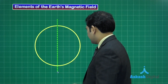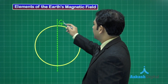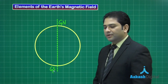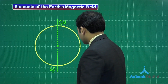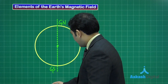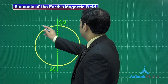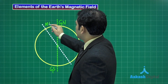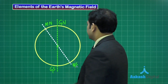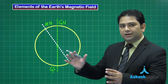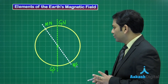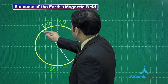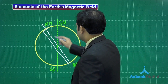This is the geographical meridian, with the geographic north and geographic south. As we know, the magnetic north and geographic north do not coincide — they lie at different locations. Here is the magnetic north and the magnetic south. To understand all these things, we take an imaginary magnet which can be shown here just for reference.